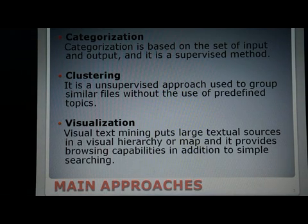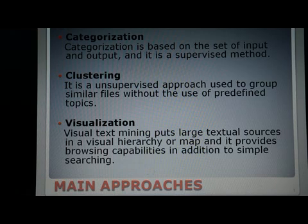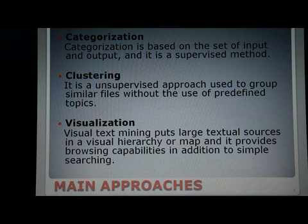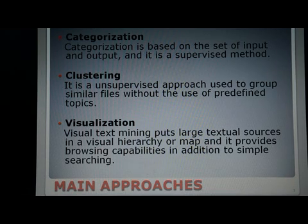There are three main approaches to this topic. First, categorization: categorization is based on a set of inputs and outputs and is a supervised method to classify files. Input and output examples are acquired to train a learning model. The main objective is to train a classifier depending on existing examples, after which unknown examples are characterized automatically.